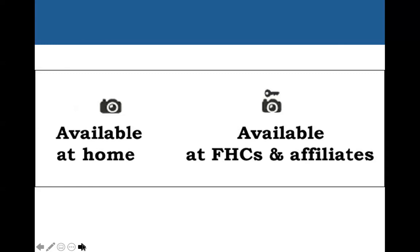The library will recognize where you're trying to access the records from. There is also a map accessible from the FamilySearch homepage that shows you where all the family history centers are located, so keep that in mind for those two icons.